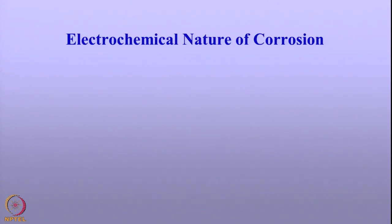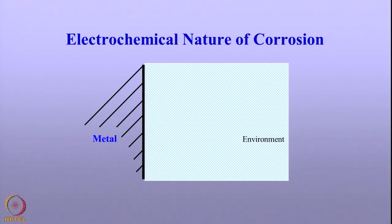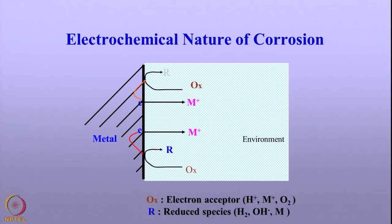To summarize: a metal comes into contact with the environment, gets oxidized, and releases electrons. These electrons are absorbed by the various species present in the environment — H⁺ can get reduced to hydrogen, metal ions can get reduced to metal, and oxygen can get reduced to hydroxide. These are all possible in corrosion.